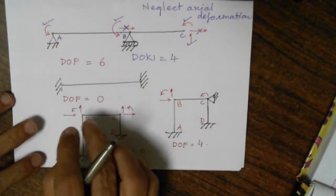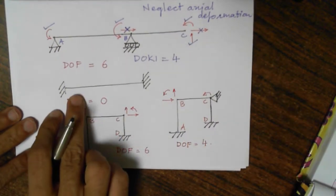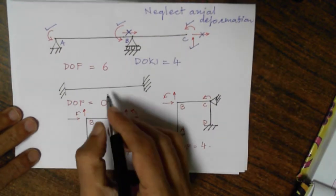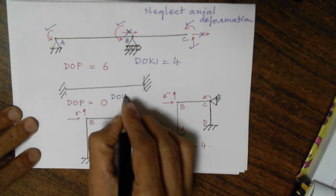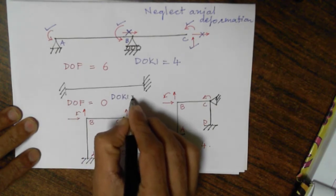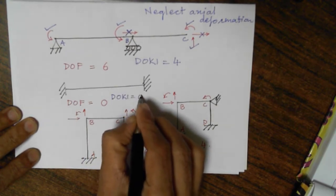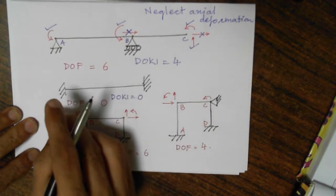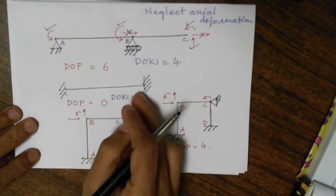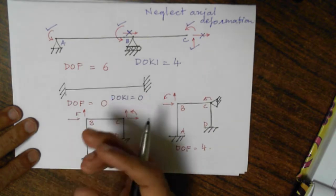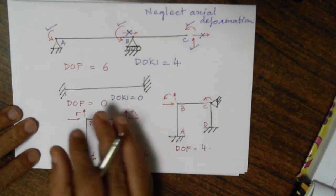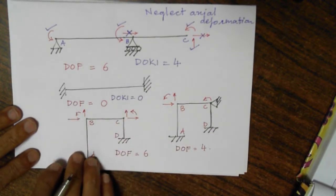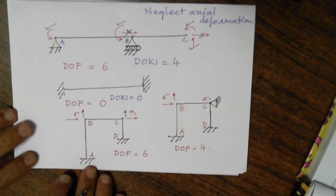Now let us talk about a fixed beam. Degree of freedom is zero and what is degree of kinematic indeterminacy? It is also zero. Since there is no degree of freedom, there is no question of possible or non-possible degrees of freedom — it is equal to zero.